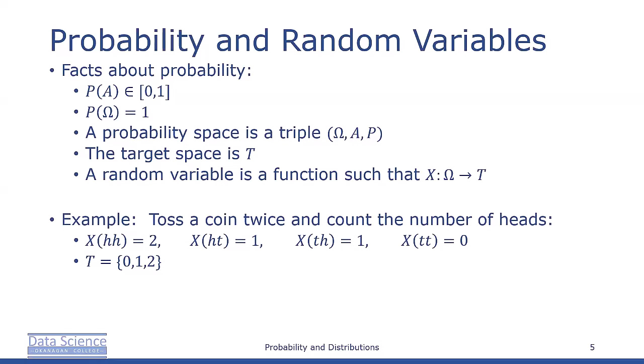The probability of a single event must lie on the interval [0,1], and the total probability over all outcomes in the sample space omega must be equal to 1. That is, P(omega) equals 1.